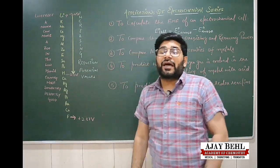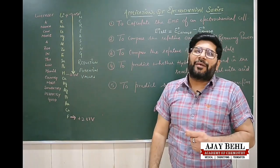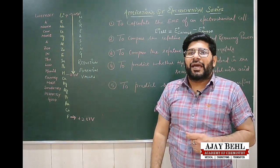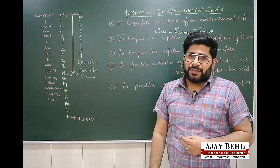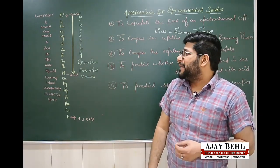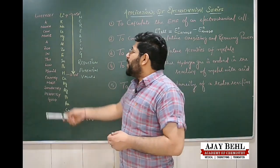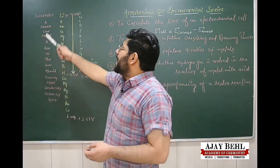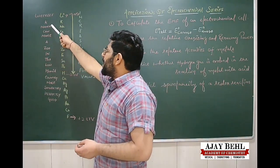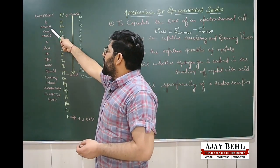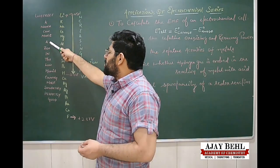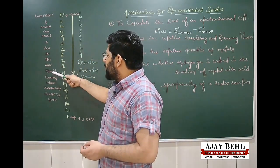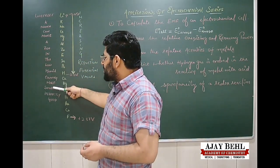Today we will be learning a trick to memorize all these elements in a very short span. The mnemonic is: 'Lovepreet Ke Nana can make a zoo in the low humid country more satisfactory, perfectly good.'